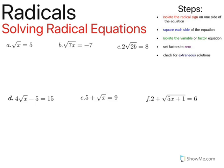We're looking at A. Our first step is to isolate the radical sign to one side of the equation. As you can see here, the radical sign is already isolated and by itself. So we can move on to step two, which is to square both sides of the equation. I'm going to square the square root of x, and I'm going to square five.